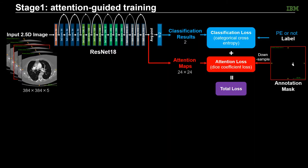We perform the attention training on a ResNet-18 in stage one. The input is a 2.5D image slab with 5 consecutive slices, and we have the annotation mask corresponding to the center image slice. While training the network, in addition to the classification loss based on the PE label of the input image slab, we also have the attention loss to enforce the attention maps to be consistent with the down-sampled annotation masks.